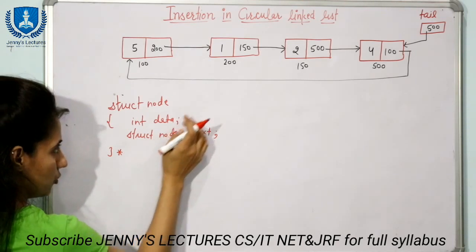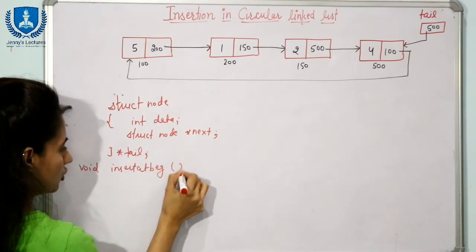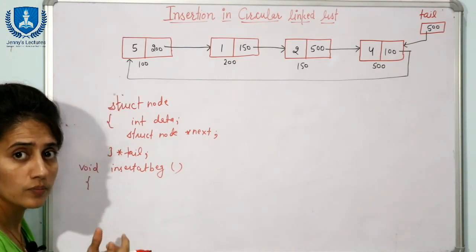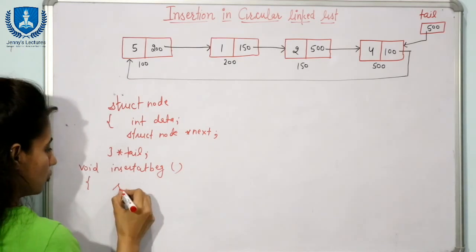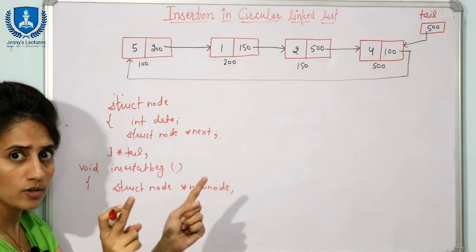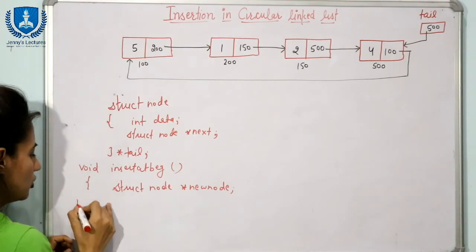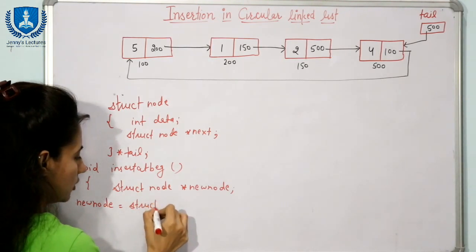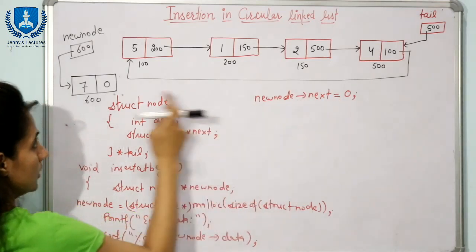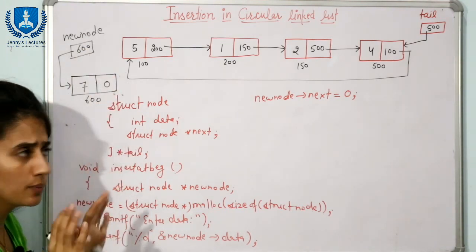We define our own data type to represent a node — this has been discussed many times. Here we are maintaining only the tail pointer. We define a function insert_at_beginning. We will create a new node using dynamic memory allocation with malloc, store the returned address in a new node pointer, and the user enters data, for example 7.